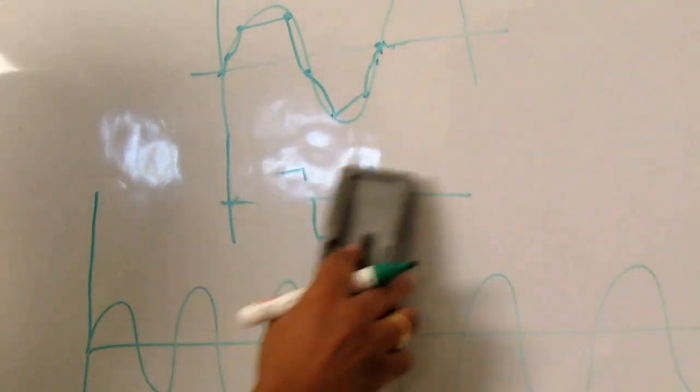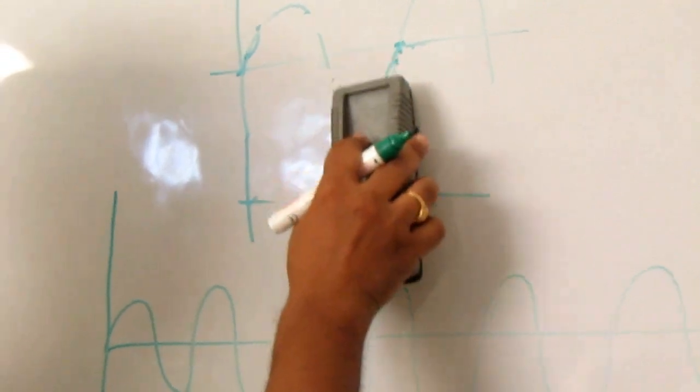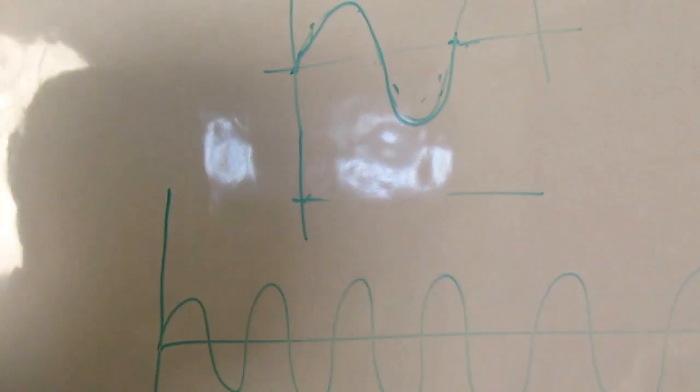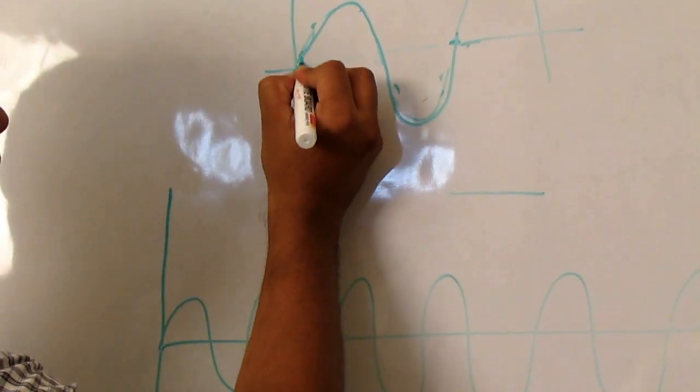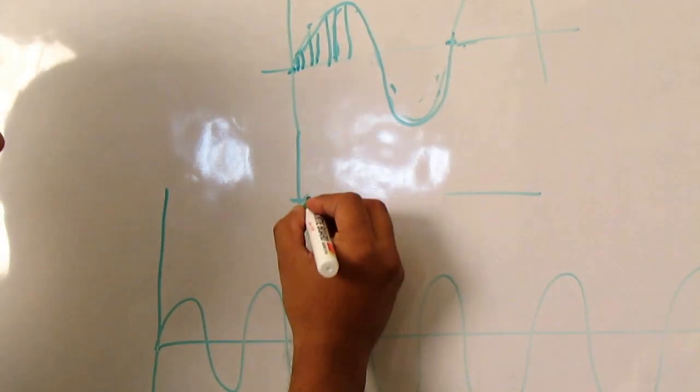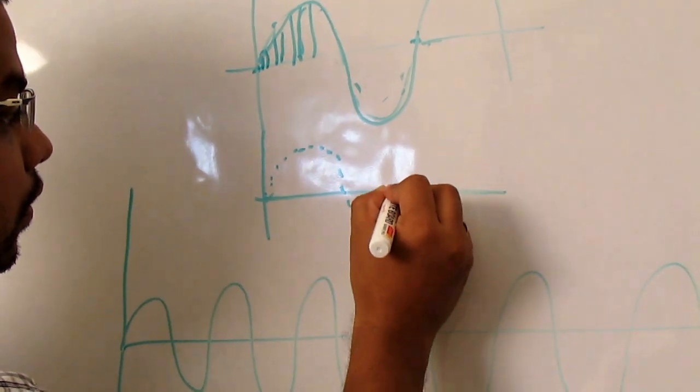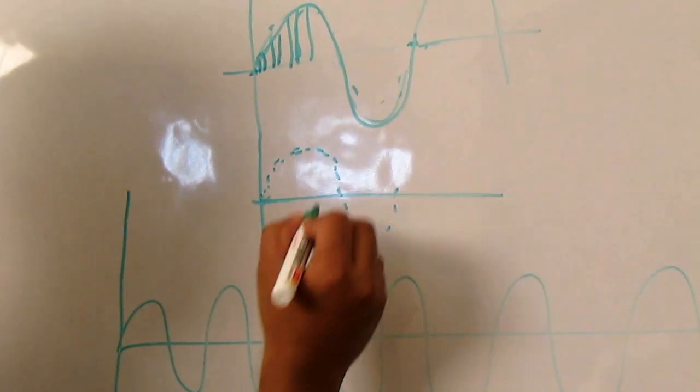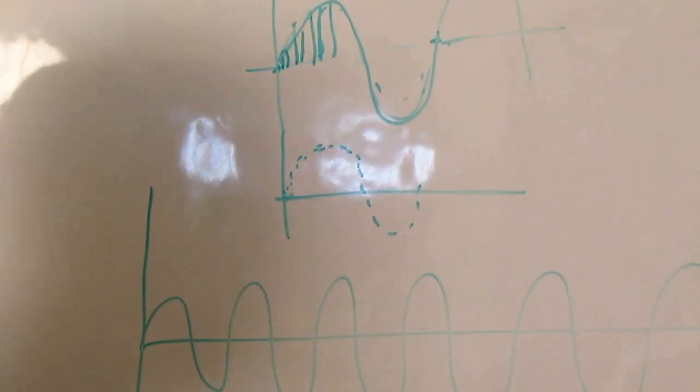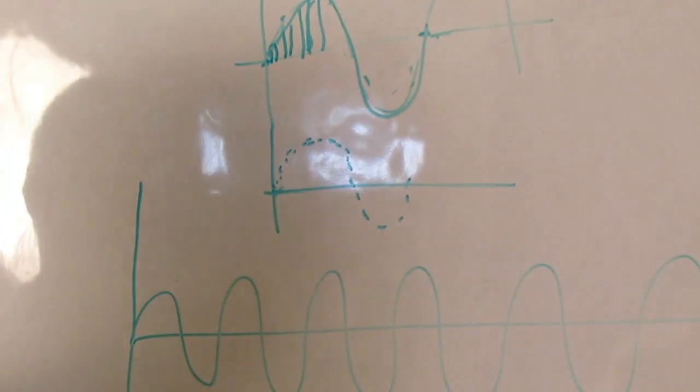So, we have to take at least hundred samples so that I can properly represent this waveform. And I am taking hundred samples. Then what I will get here? A proper, almost proper sine wave. And if I take more than 100 samples, then I will get more perfect this input.